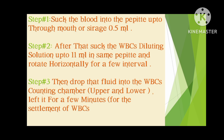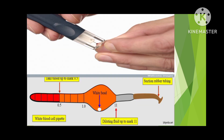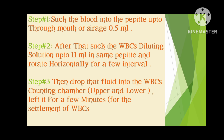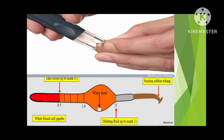The first step is to suck blood through a syringe or by mouth into the pipette up to the 0.5 mark, or 0.5 microliters. After that, we suck the WBC diluting solution into the same pipette up to the 11 microliter mark. We then rotate it horizontally so that the blood and solution mix thoroughly. Here you can see 0.5 microliters of blood and up to 11 microliters of WBC diluting solution.